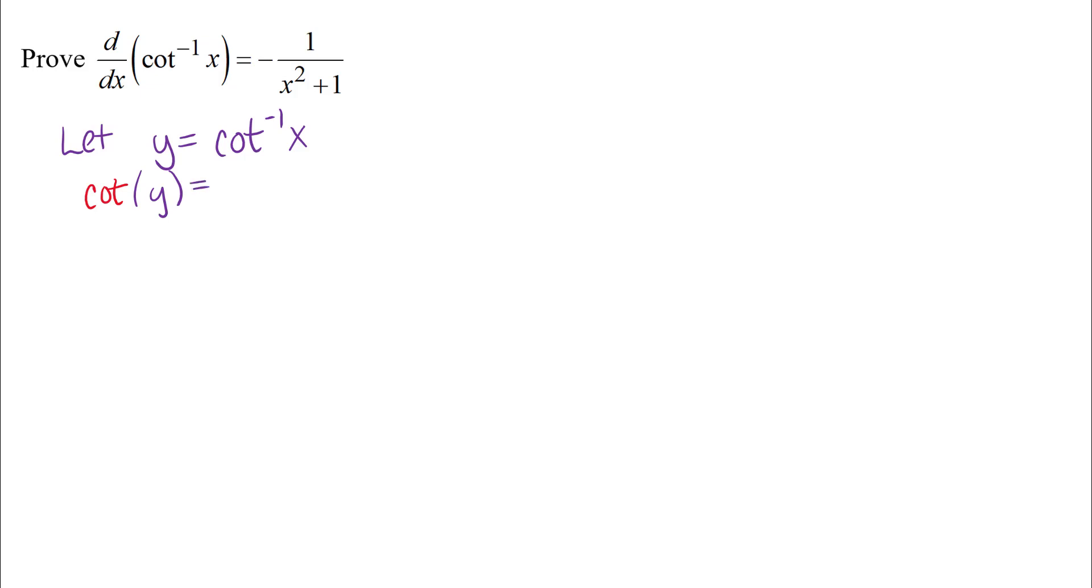The inverse function of that would be the cotangent function. So I'm going to apply the cotangent function to both sides and the goal of that is that the function and its inverse on the right hand side undo each other. So that expression that we have next would be cotangent y on the left side equals just x on the right hand side here.